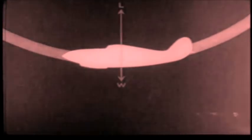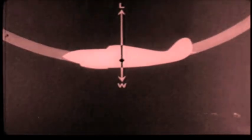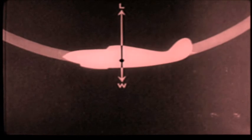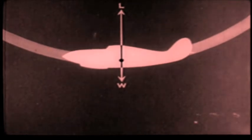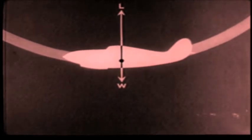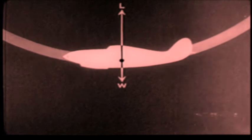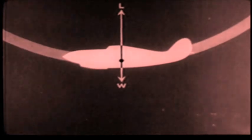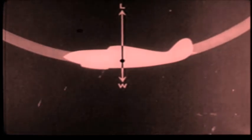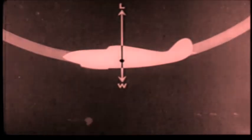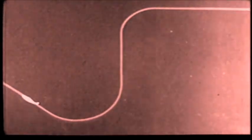In pulling out of the dive, the angle of attack must be increased slowly. During this maneuver, the lift may attain several times the value of the weight. This increase in lift produces acceleration, which in turn produces a curved flight path.